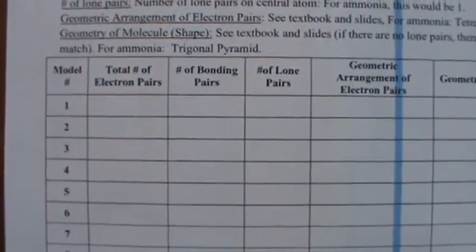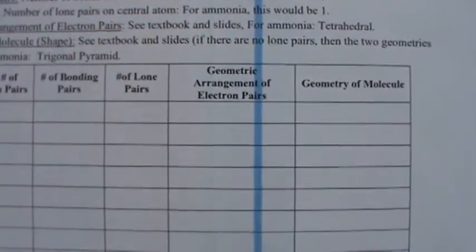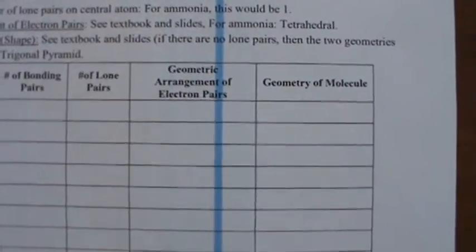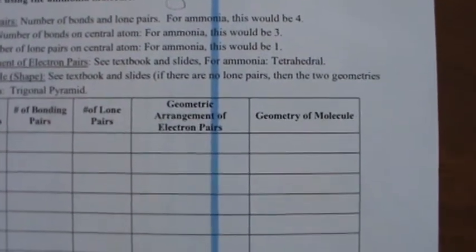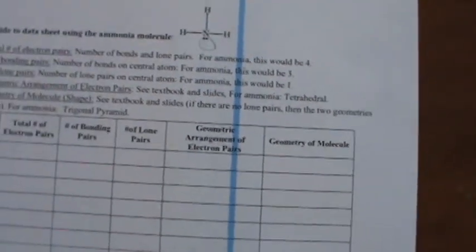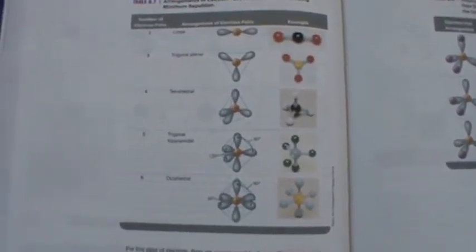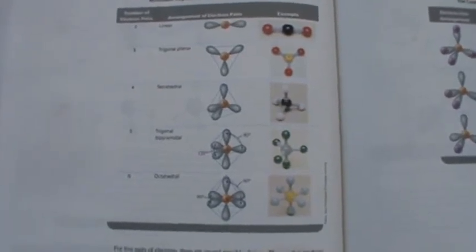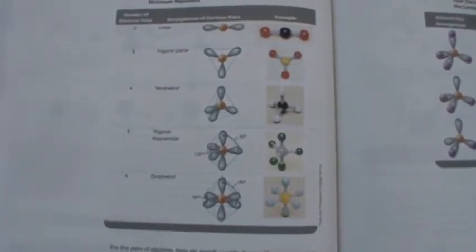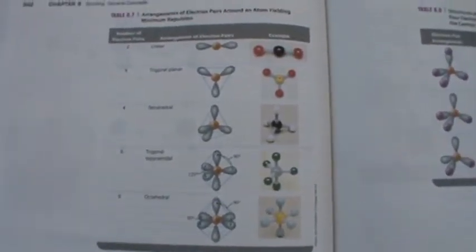It says total number of electron pairs, number of bonding pairs, number of lone pairs, geometric arrangement of electron pairs, and geometry of molecule. Before you do this, you need to read the last slides and the textbook. If you try to do this without looking at that section, you're not going to be able to.